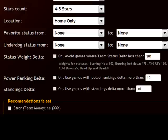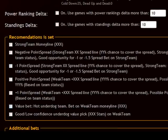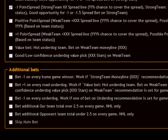Here you can filter out games by the power ranking or by standings. Here you need to check or set the recommendations list. For example, strong team money line, minus 1 point spread.